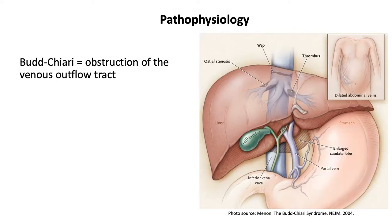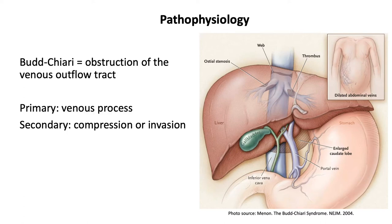Budd-Chiari is an obstruction of the venous outflow tract — specifically an obstruction of the hepatic veins or IVC. It's important to note that Budd-Chiari syndrome does not include cardiac disease or pericardial disease, which are other mechanisms of post-hepatic liver dysfunction. It is specific to obstruction of the venous outflow tract, either from primary causes such as venous thrombosis or phlebitis, or secondary causes where the vein becomes compressed or invaded by a malignancy.